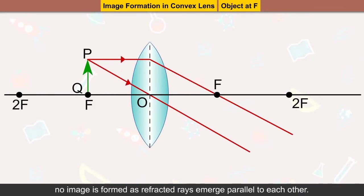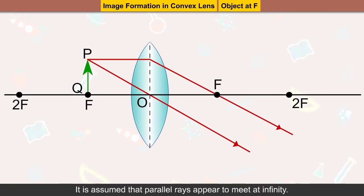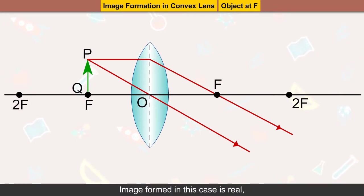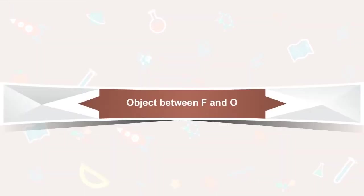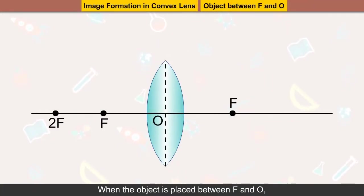Object at F: when the object is located at the focal point, no image is formed as refracted rays emerge parallel to each other. It is assumed that the parallel rays appear to meet at infinity. The image formed in this case is real, inverted, and highly enlarged.